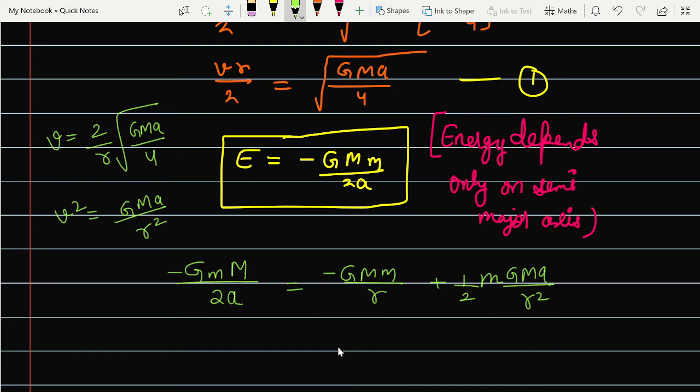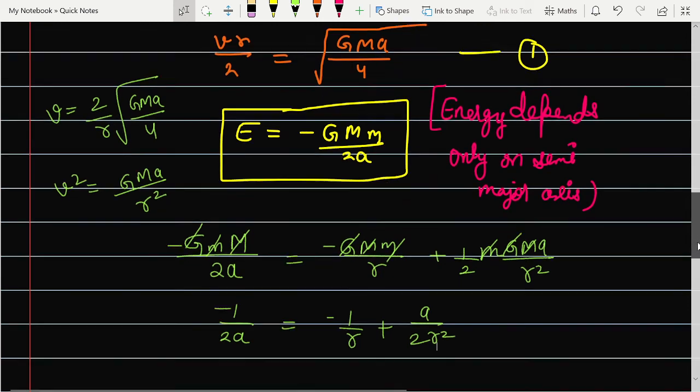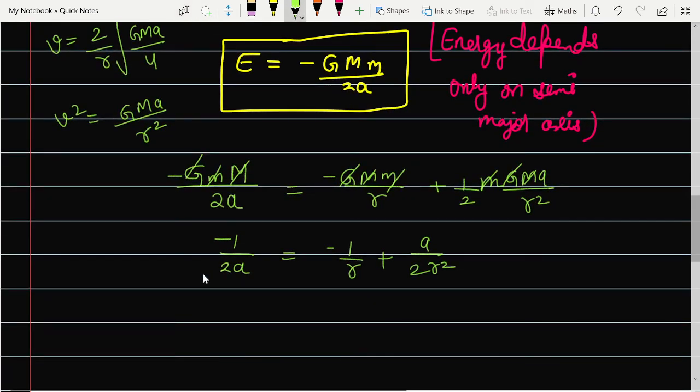Now you can see GMm, all three are cancelled. So here you have the remaining part: 1 by 2a, here you have minus 1 by r, and here you have a upon 2r square. So here you have a quadratic equation.